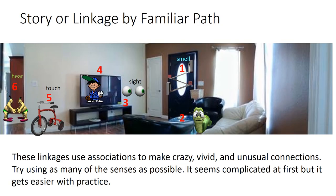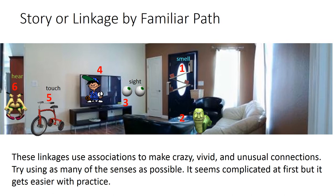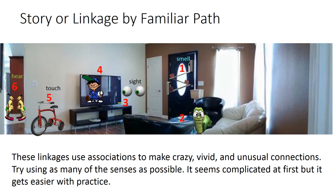These linkages use associations to make crazy, vivid, and unusual connections. Try using as many of the senses as possible. It seems complicated at first, but it gets easier with practice. In the example, number one — olfactory — you use smell. Number three — ocular motor — you use sight. Number five — trigeminal — you use a sense of touch. And number six — abducens — you use a sense of hearing.